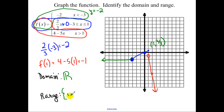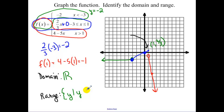For the range, think about what y values aren't covered. The red bottom function covers everything less than negative 1. The highest y point graphed is the point at (1, 2/3). So the range is y less than or equal to 2/3.